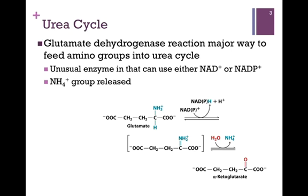The glutamate dehydrogenase reaction is the major way that we feed amine groups into the urea cycle. It's a rather unusual enzyme in that it can use either NAD or NADP as a cofactor. First, glutamate is oxidized to form an intermediate, and then the amine group is released through hydrolysis with the formation of alpha-ketoglutarate. At this point, we've released the amine group from glutamate but haven't yet incorporated it into a urea molecule.